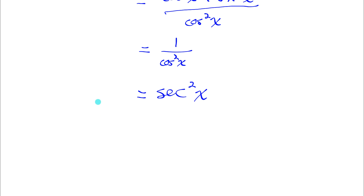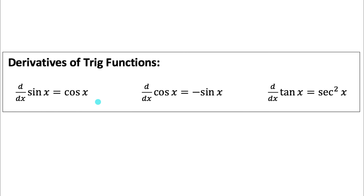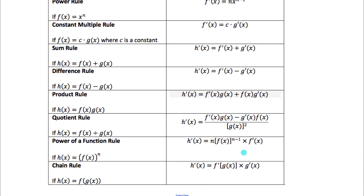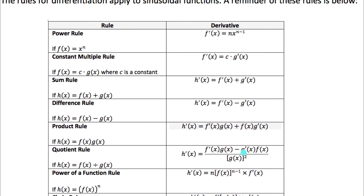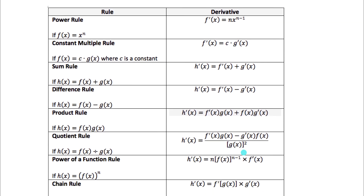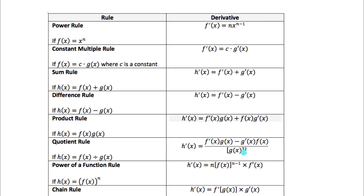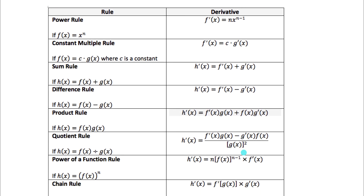So we now know all three: the derivative of sine is cosine, the derivative of cosine is negative sine, and the derivative of tangent is secant squared. Here are all the derivative rules we know from the first unit as well — feel free to pause and review those. Now let's find the derivative of some trig functions.